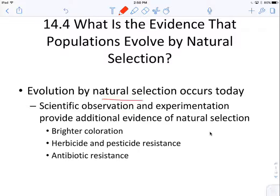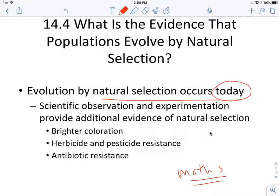Evolution by natural selection happens today all the time. We look at different species, different environments, different characteristics, and see how they change over a period of time. Different things that can be selected by natural selection include different coloration of organisms, herbicide and pesticide resistance in plants, and antibiotic resistance in bacteria.